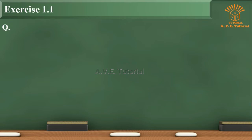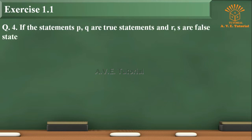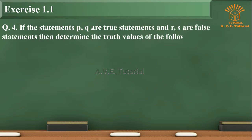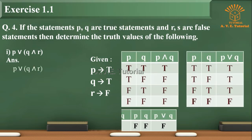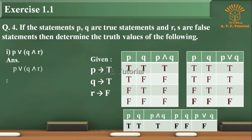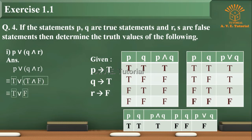Exercise 1.1, Question 4: If the statements P, Q are true statements and R, S are false statements, then determine the truth values of the following. Sub-question 3: P or (Q and R). Answer: P is true, Q is true, R is false. This is equivalent to T or (T and F), which is equivalent to T or F, which is equivalent to True (T).